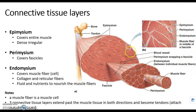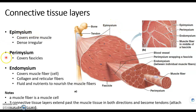At each end of a whole muscle, we have a tendon that connects it to bone. The tendon is actually the epimysium, perimysium, and endomysium continuing even though the muscle cells or muscle fibers end at a certain point. So the tendons are a continuation of these three connective tissue layers.